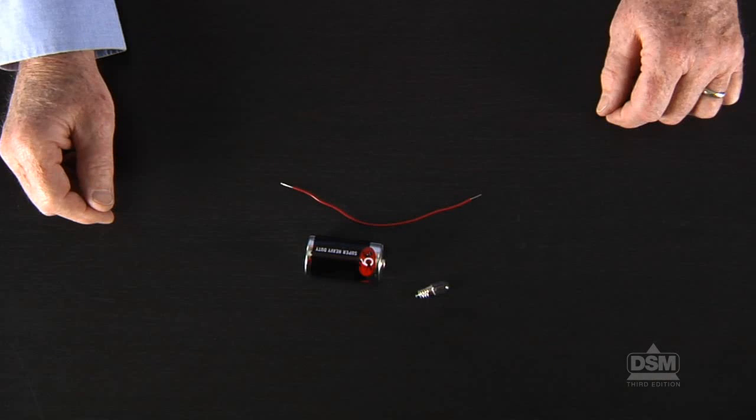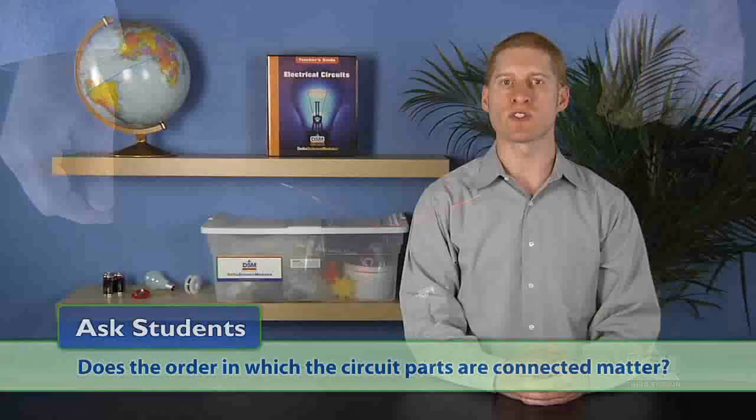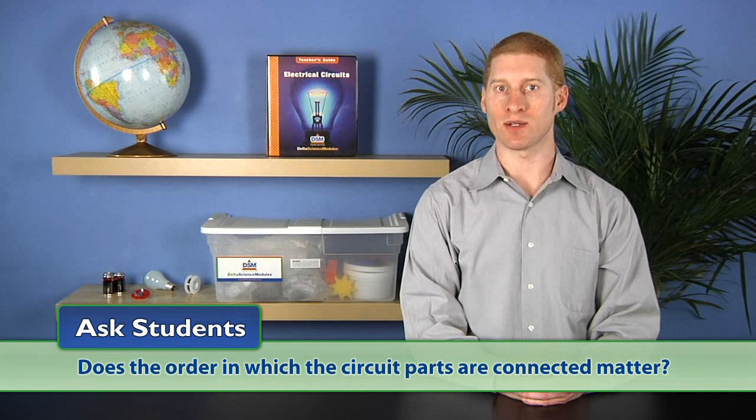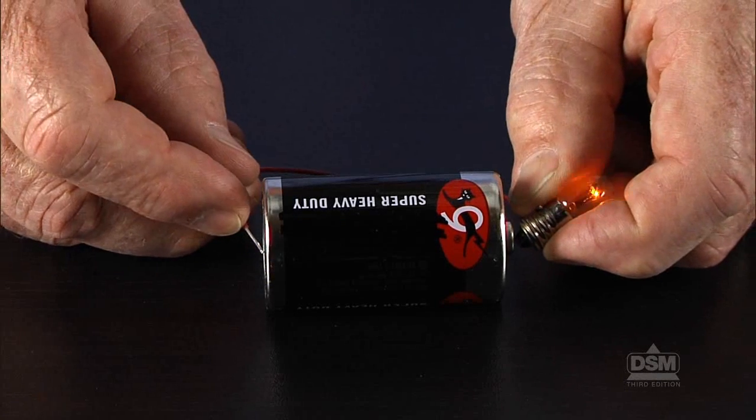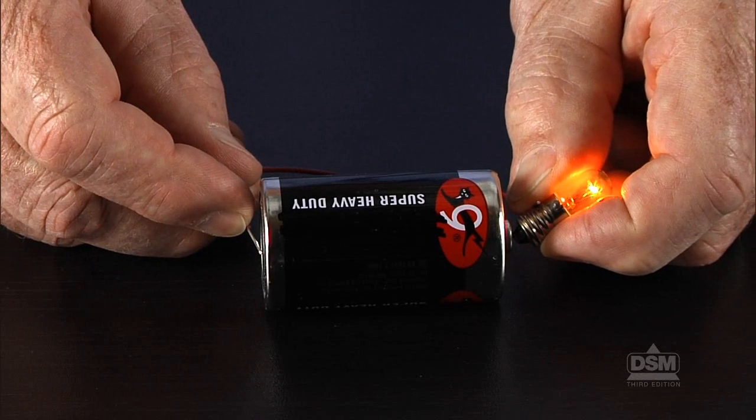Ask students, what are the parts of the circuit? Students may identify the battery, wire, and bulb. Then ask, does the order in which the circuit parts are connected matter? Help students understand that to make the bulb glow, the current must be able to flow from one end of the battery through the bulb and back to the other end of the battery.